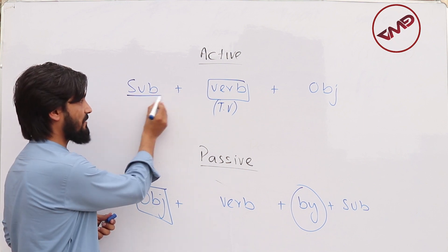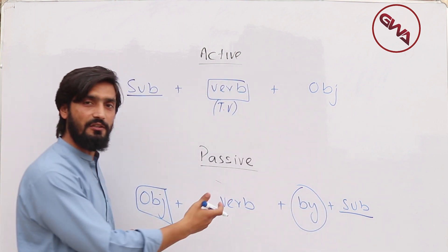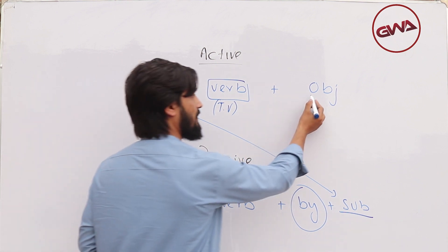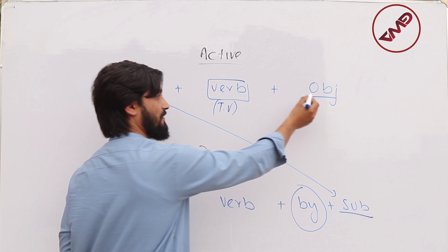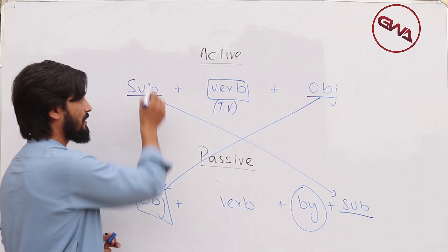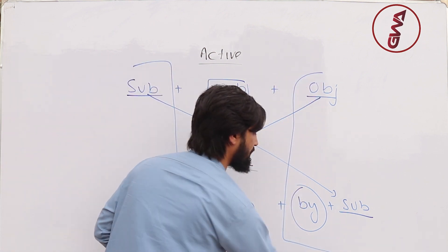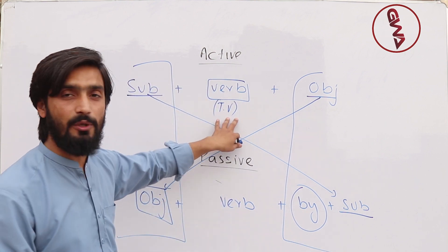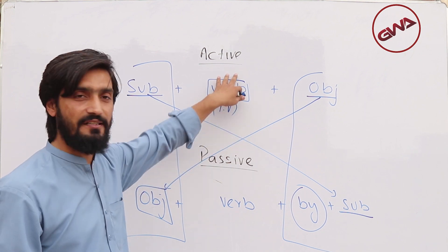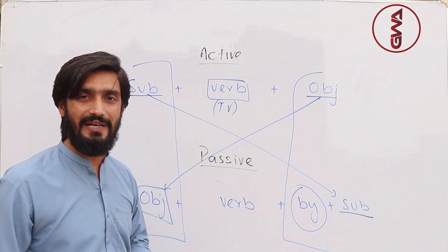Remember that the subject in active voice is before the verb, but it is after the verb in passive voice. The object in active voice is after the verb, but it is before the verb in passive voice. Our main focus is on the verb — how to change a verb from active voice into passive voice — because replacing the subject and object positions with each other is quite easy.